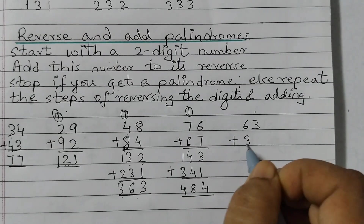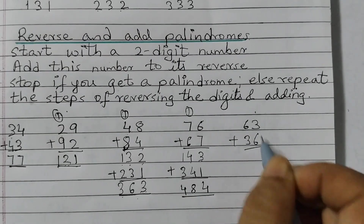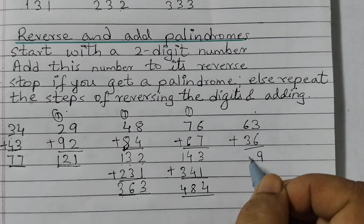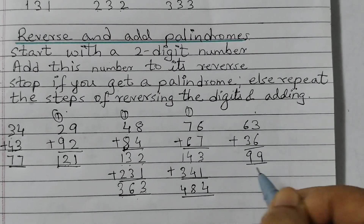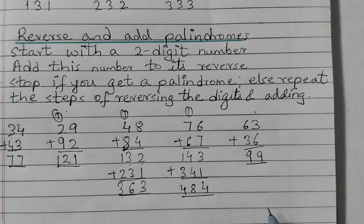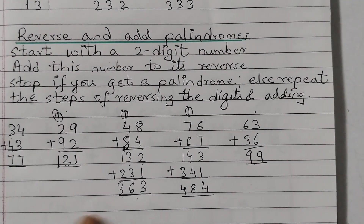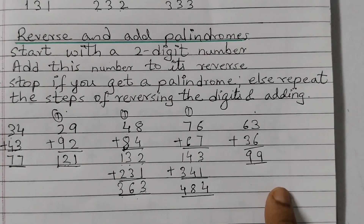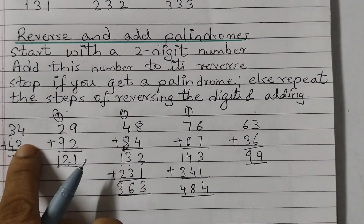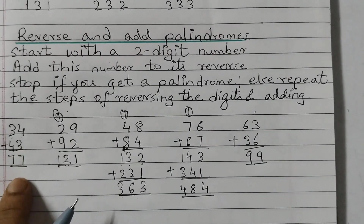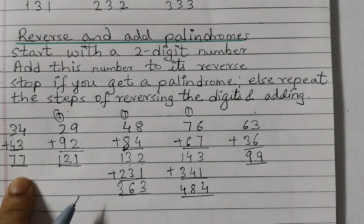Let us take another example: 63. Its reverse is 36. 3 plus 6 is 9, and 6 plus 3 is 9 — giving 99, again a palindrome. So in all these examples, when we take a two-digit number and add it to its reverse, we get a palindrome.